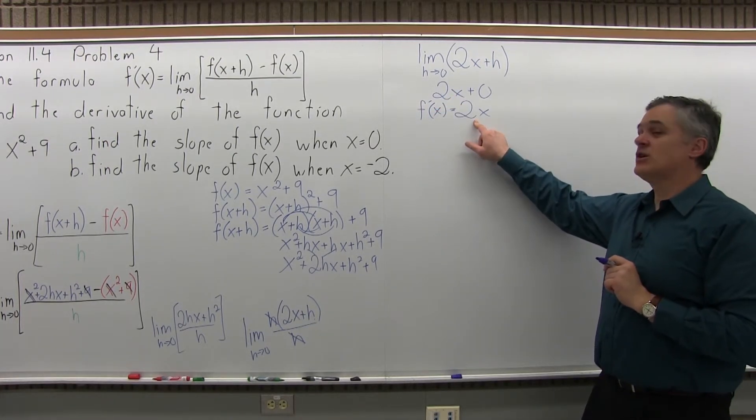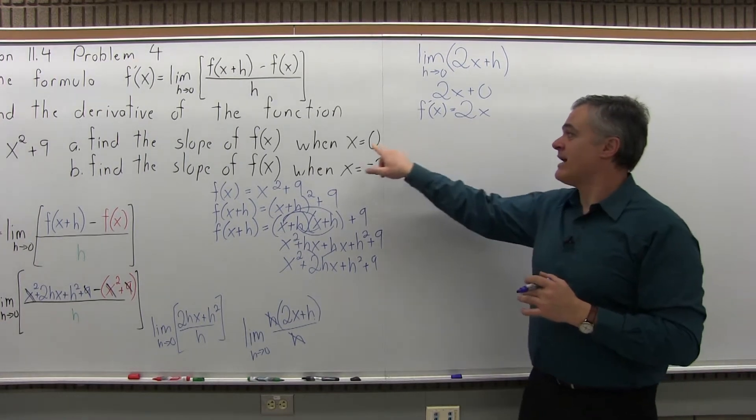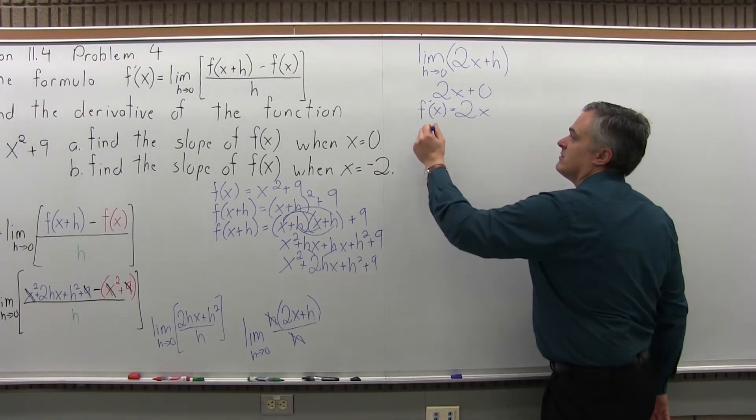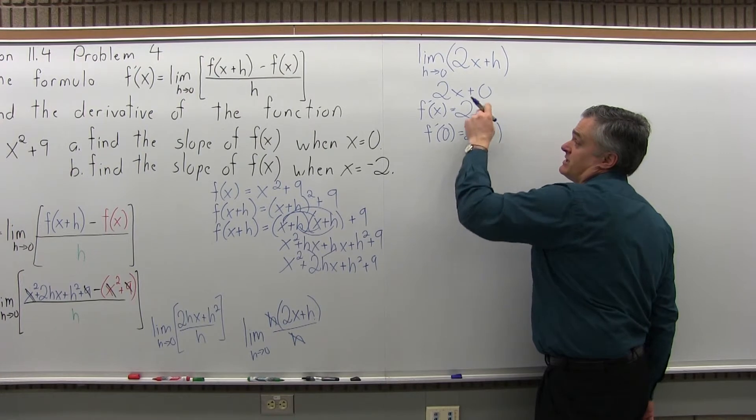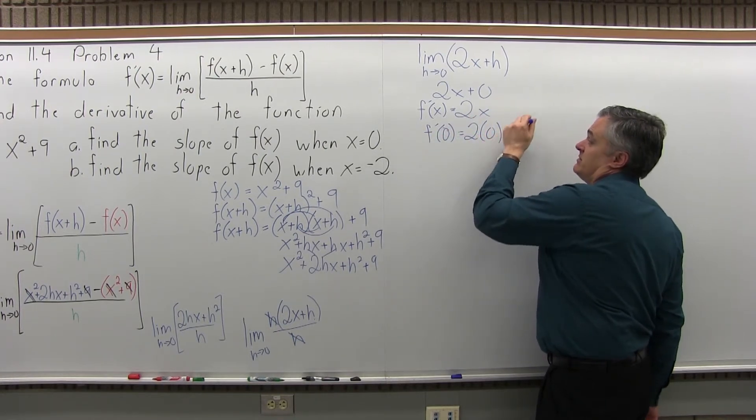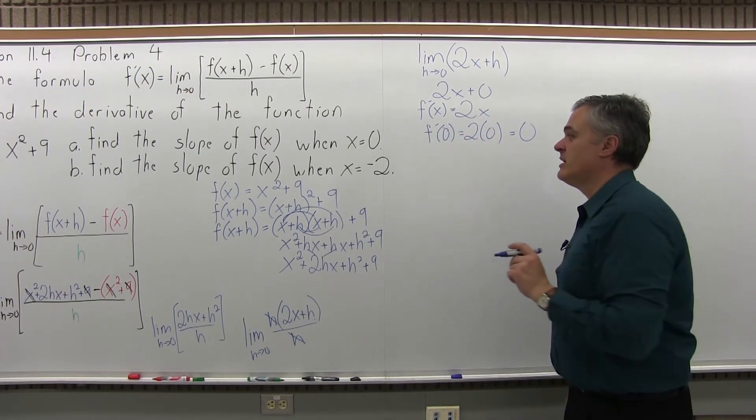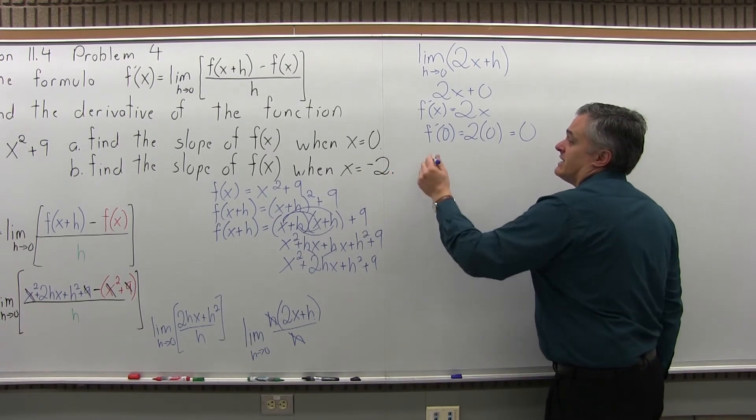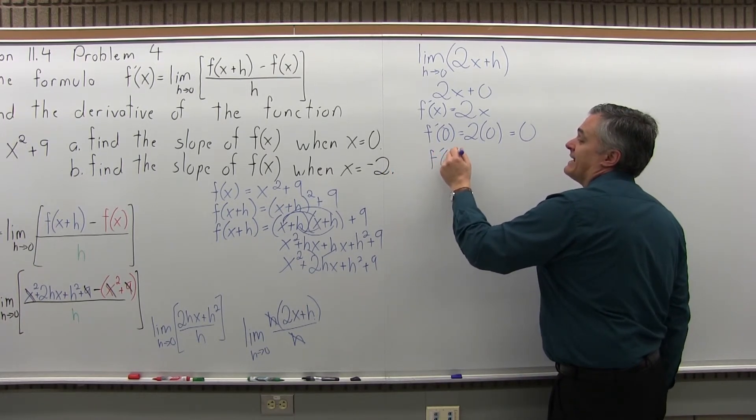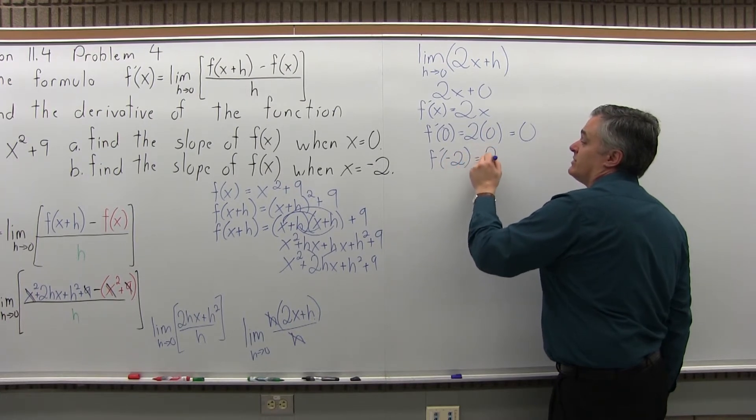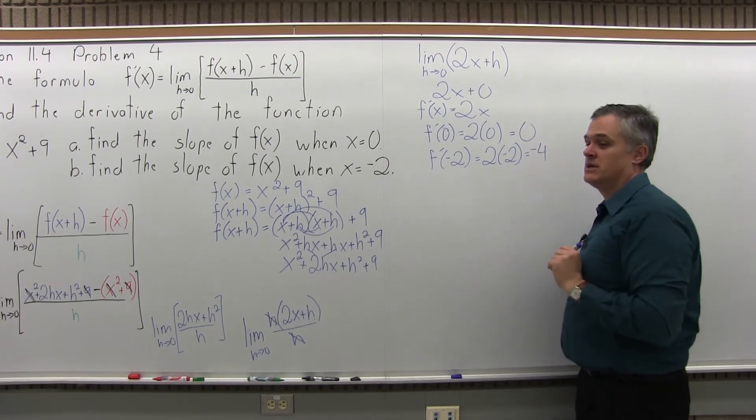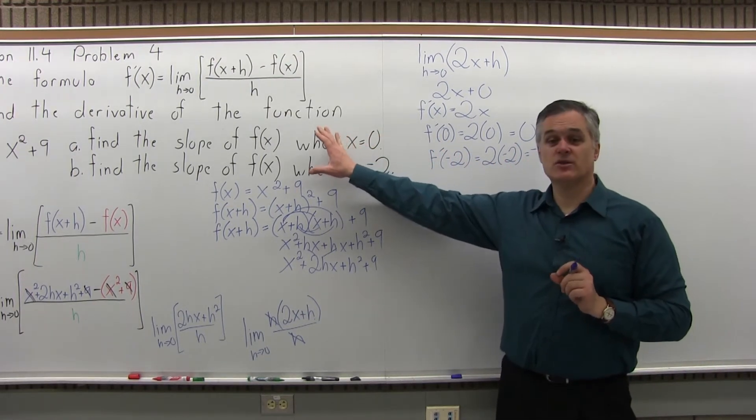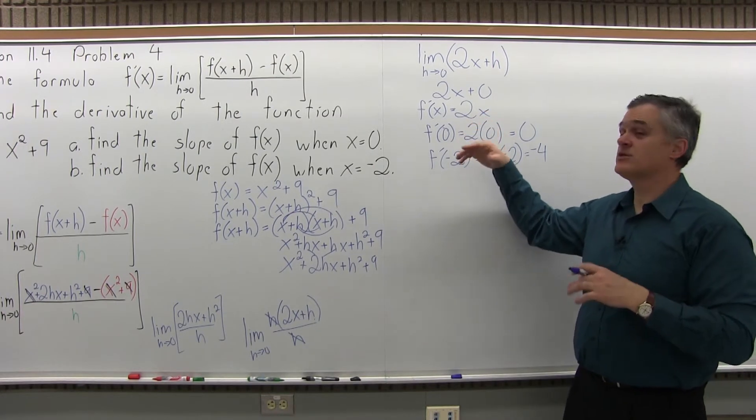At this point, when x is zero, f'(0) equals 2 times zero. I replace the x with zero. 2 times zero is zero. The slope when x is zero is zero. When x is -2, f'(-2) equals 2 times -2, or -4. So that's the slope at the two points that we're asked in the question. But once you find f'(x), you can find the slope everywhere.